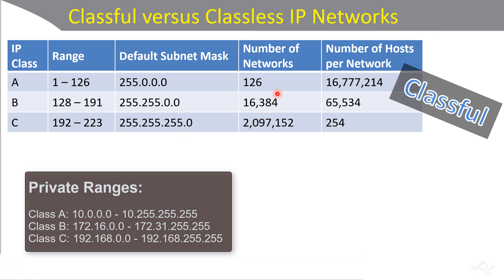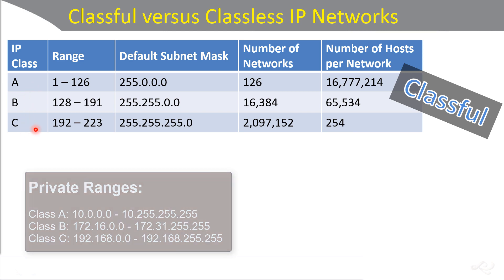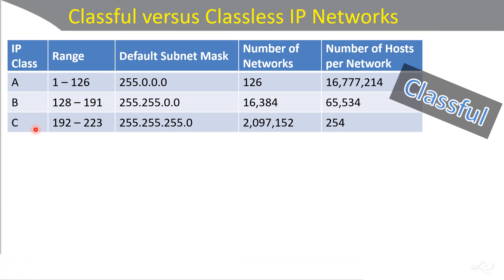The number of networks increases for each class, and the number of hosts per network decreases. So class A is great for big enterprise networks, while class C is good for small offices and home offices.